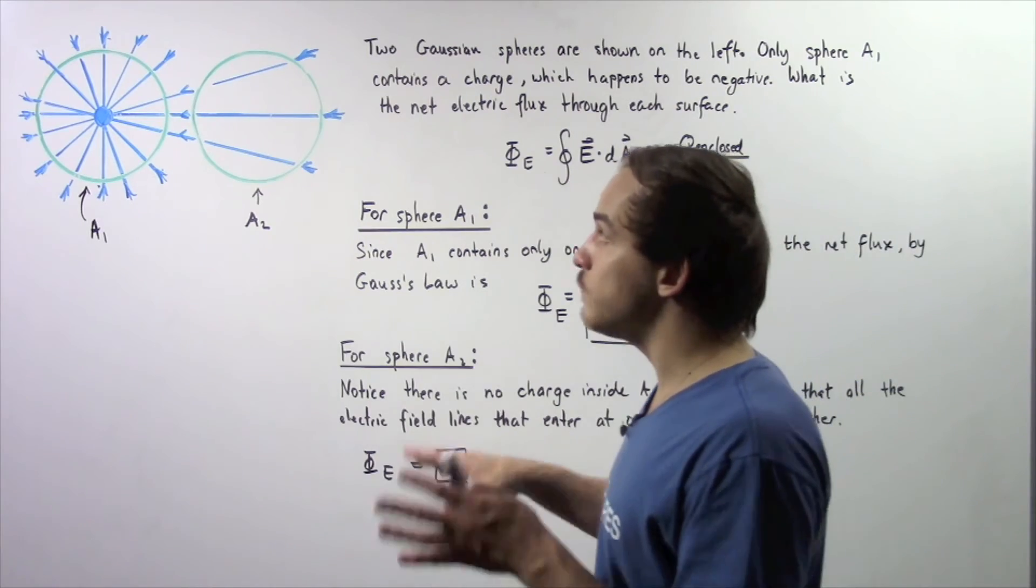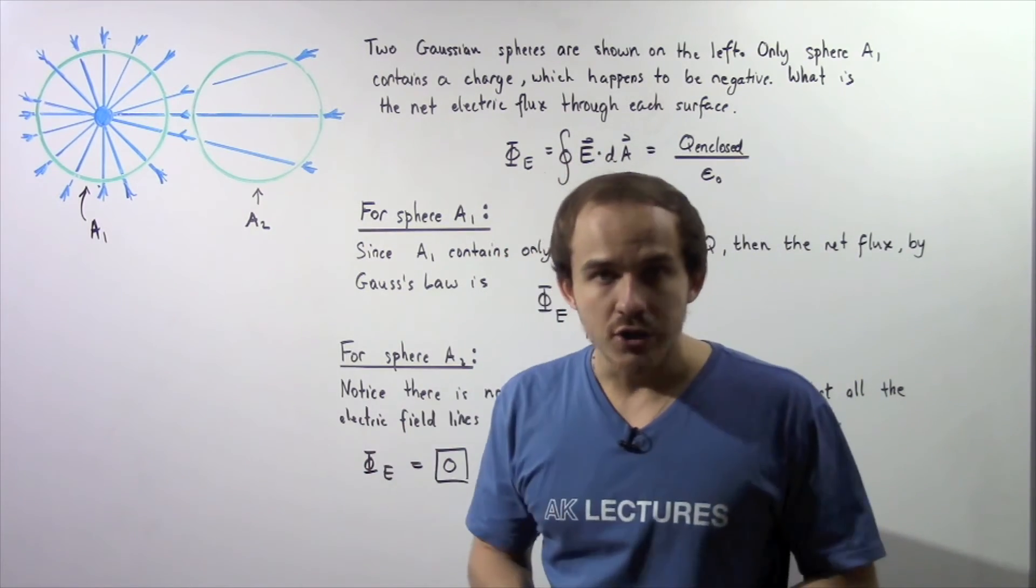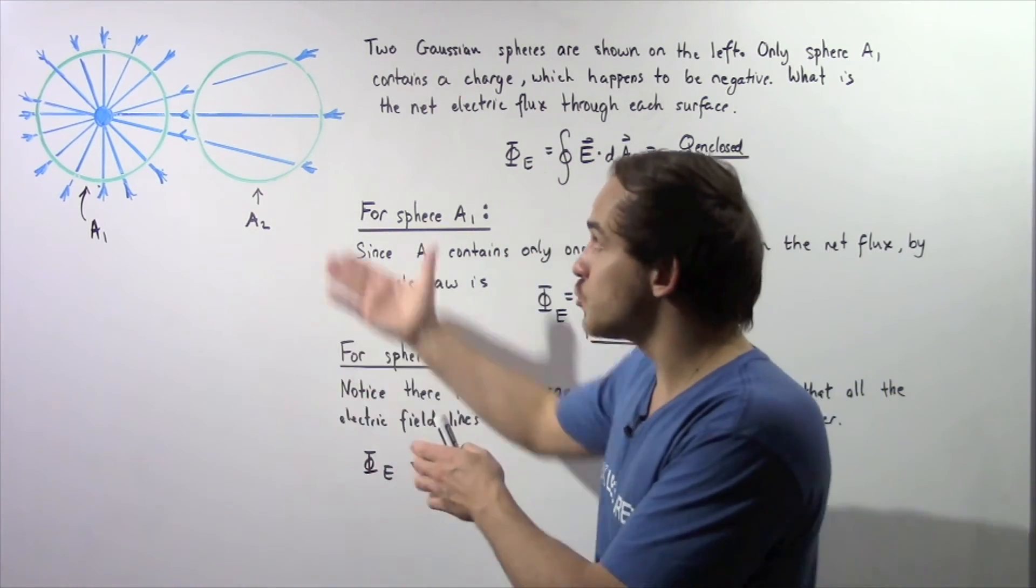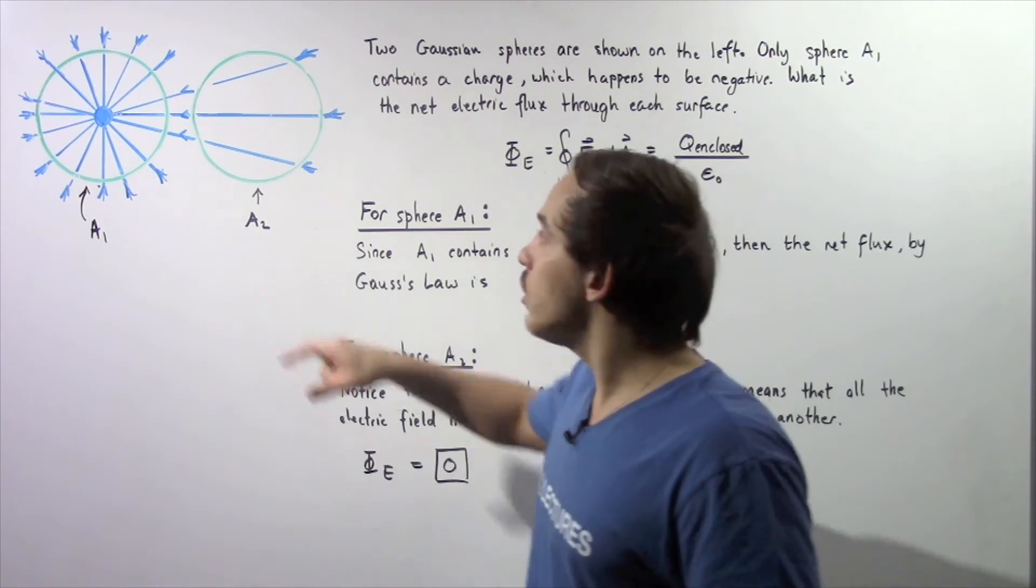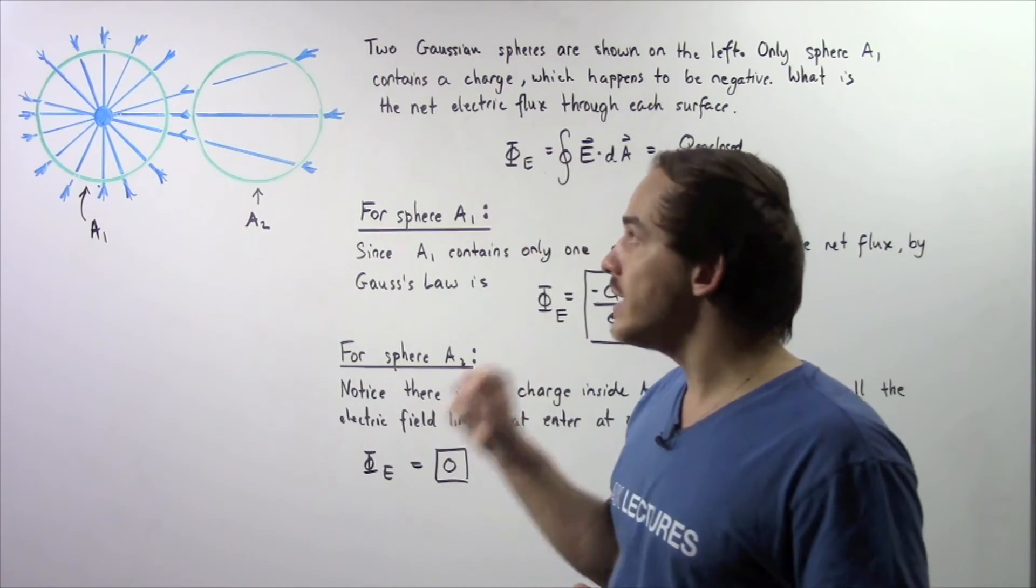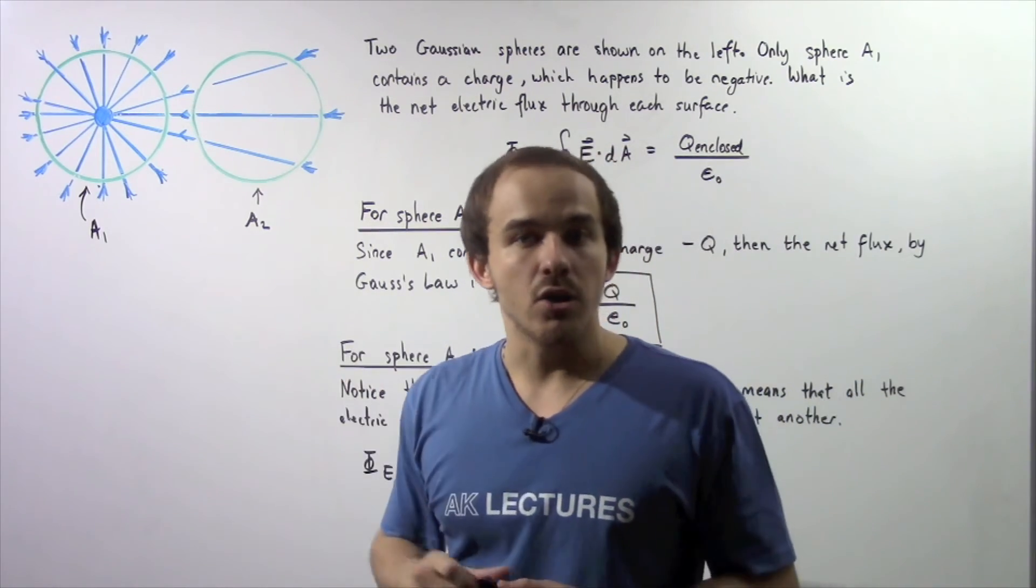Now, in fact, by definition, if we don't actually have a charge inside our chosen region as in case A2, there will be no flux because all these electrical field lines going in will come out at the other end.